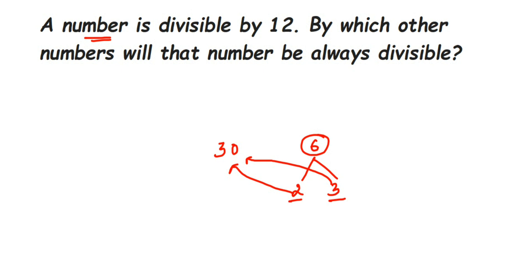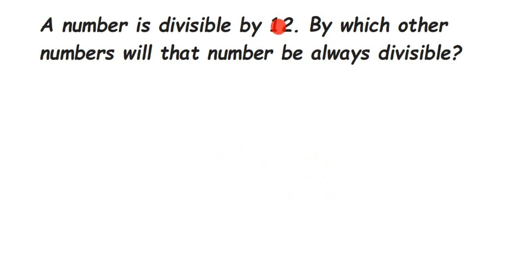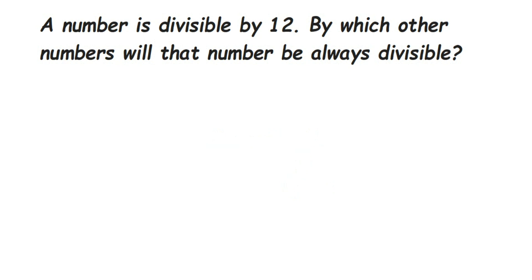So apart from 6, the numbers 2 and 3 can also divide 30. Now in this example I took 30 as the number, but in the original question we don't know the number — they've only told us that 12 divides it. Just like I took 30 and used 6 as the divisor, here we know 12 is the divisor, and we need to find what other numbers can always divide our unknown number. That means we have to find the factors of 12.